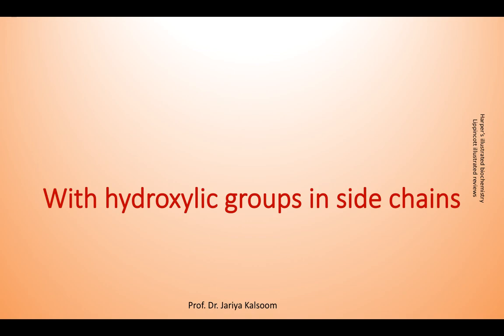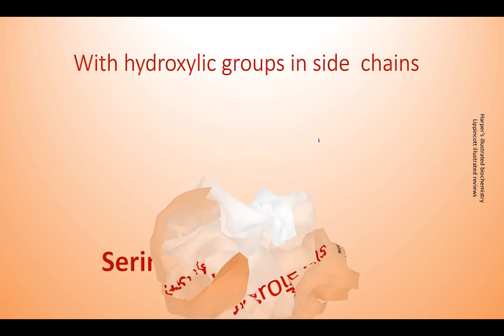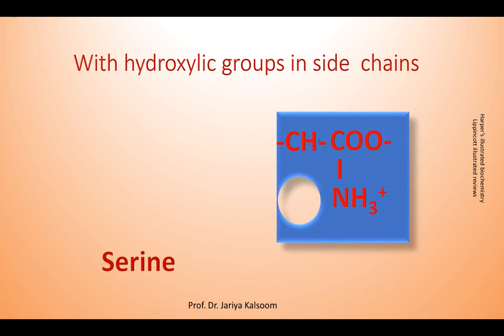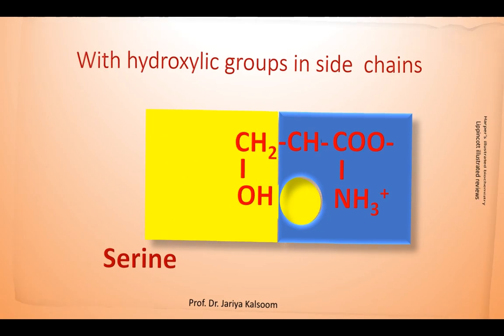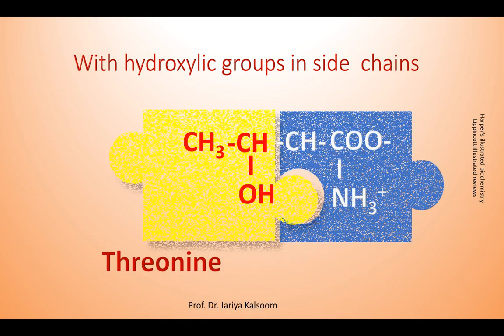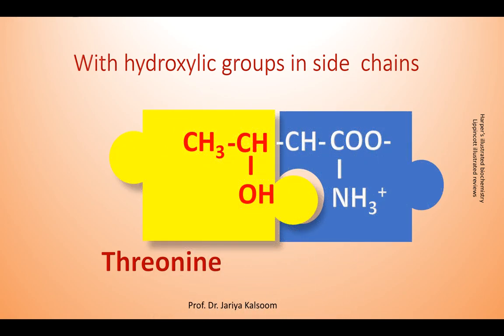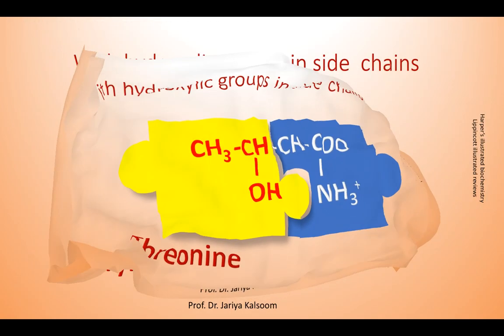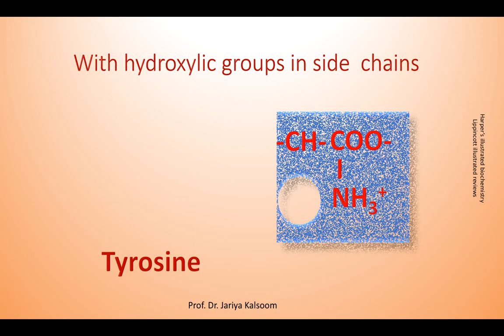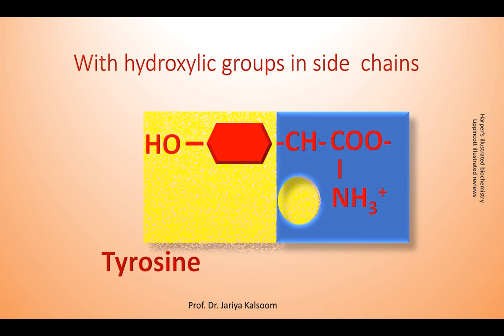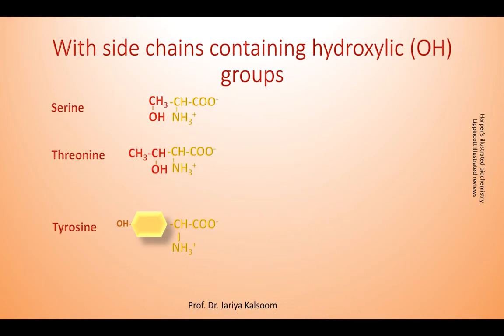There may also be amino acids with hydroxylic groups in their side chains. For example, serine or threonine, and finally tyrosine, which contains a ring structure. These are the amino acids with side chains containing OH groups.